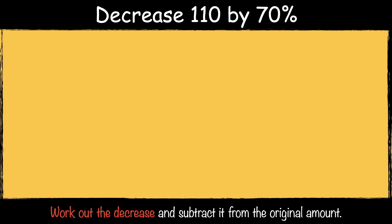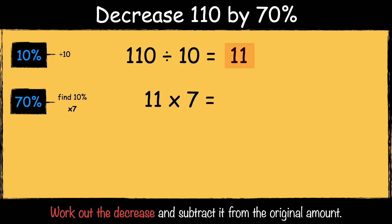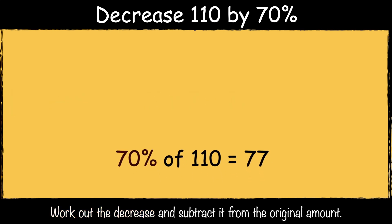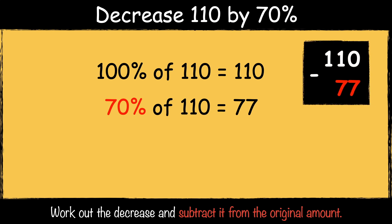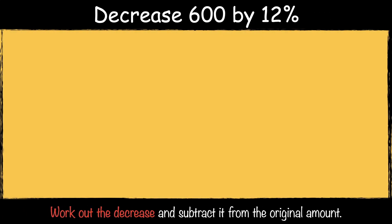Here's another example: decrease 110 by 70%. First we can find 10% of the number by dividing it by 10. 110 divided by 10 is 11. Then we multiply the answer by 7 to find 70%. 11 multiplied by 7 is 77. So 70% of 110 is 77. So 110 decreased by 70% is 33.